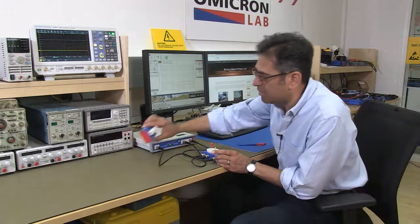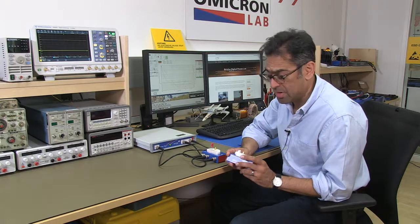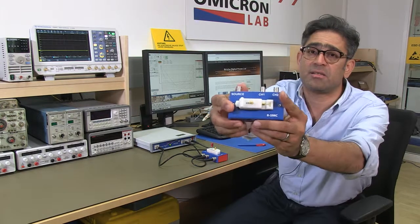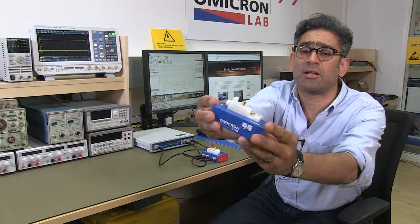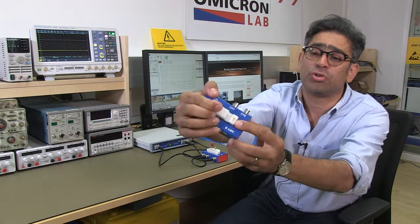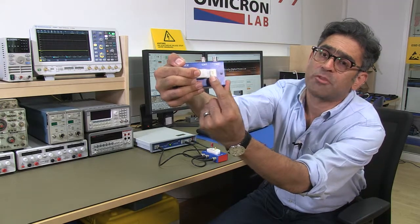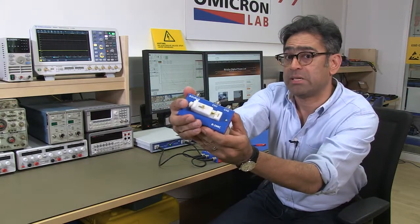This becomes especially important when you deal with the surface mount components and that's why there is a second impedance adapter which Omicron has designed so that you could actually put your surface mount component in here and then make a correct measurement without the impact of the component leads.